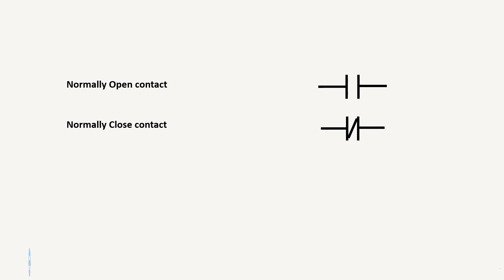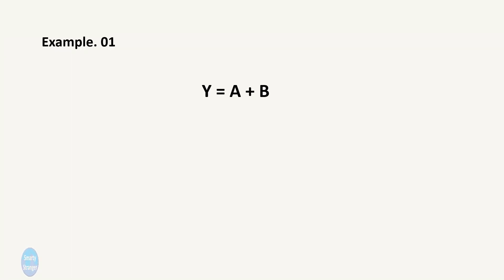Remember the basic symbols: normally open contact, normally close contact, and coil. Let's start with a simple example. Here we can see there are two inputs and one output, and a plus sign means this combination of inputs must be in OR logic.